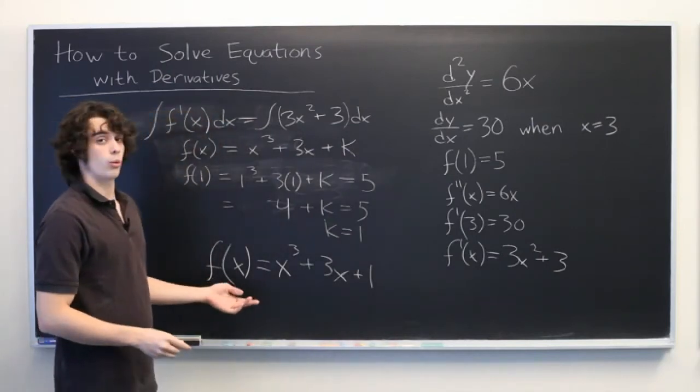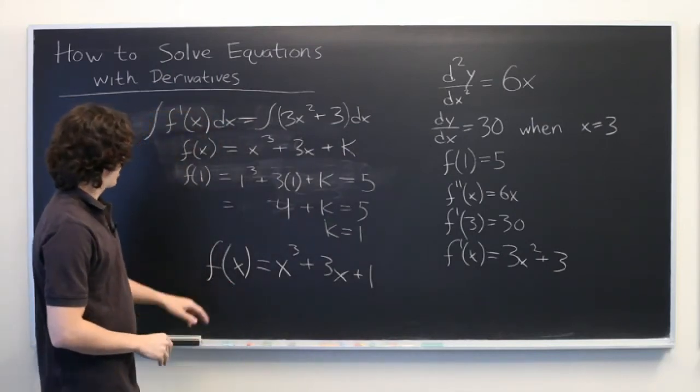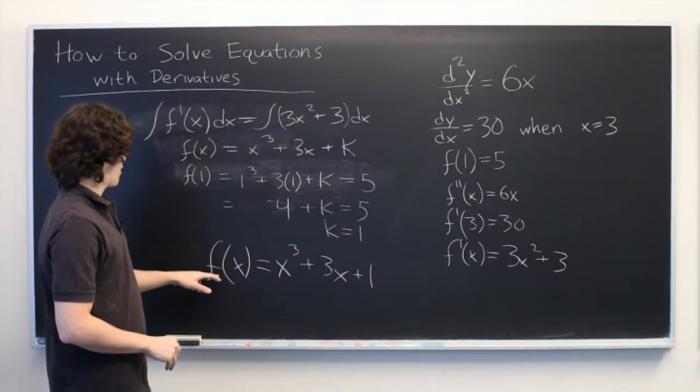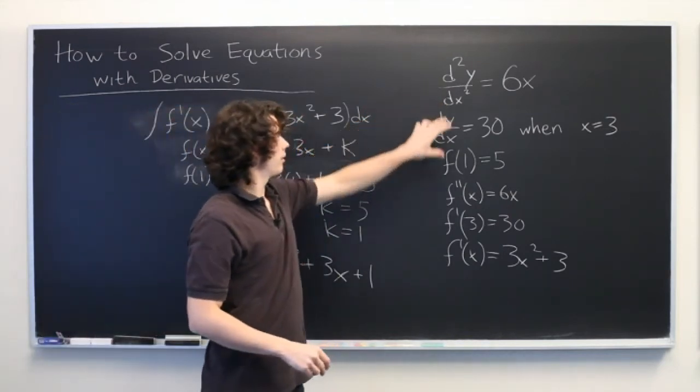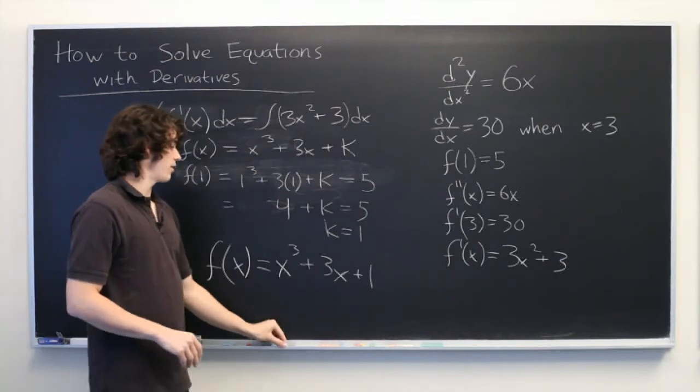Now, from here, if you want to check that your work is correct, what you can do is take the derivative of f of x twice and make sure that you get the equations that we started with. And if that's true, then you've done everything correctly.